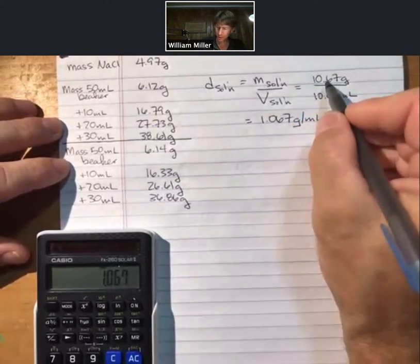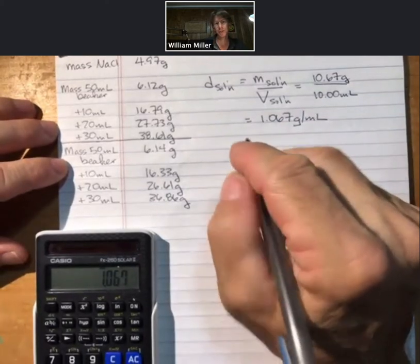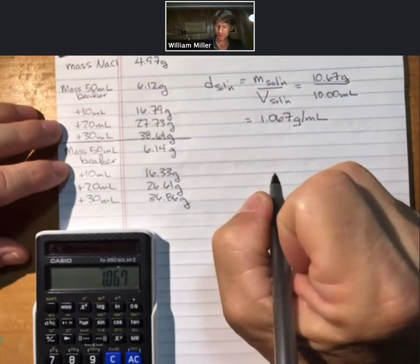We're going to carry four sig figs for our answer, and that's all that our calculator tells us.